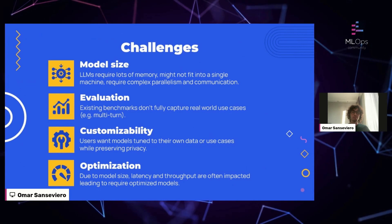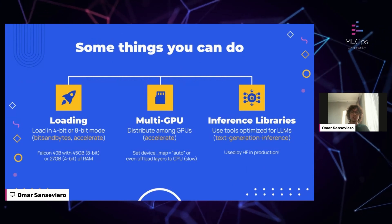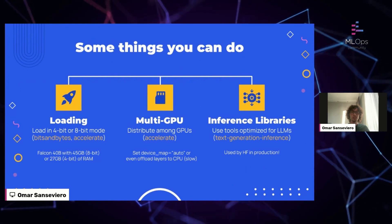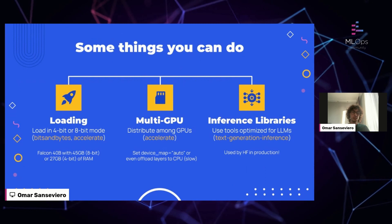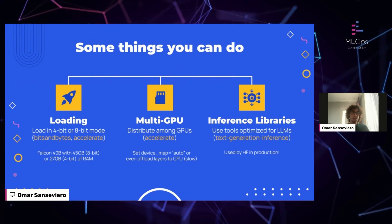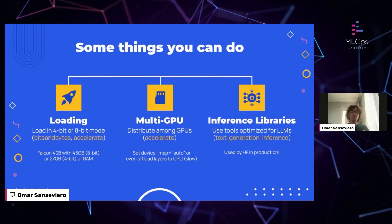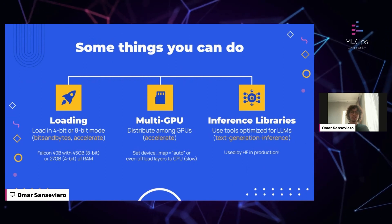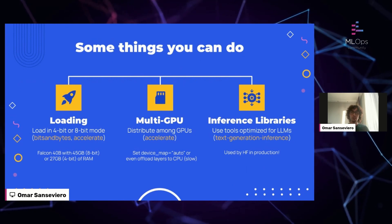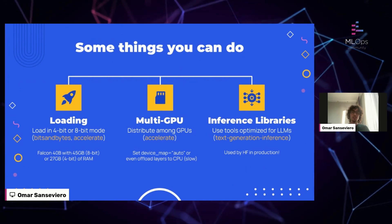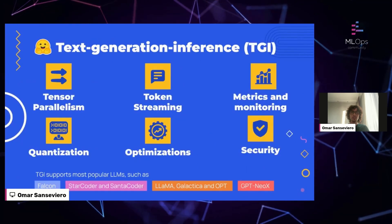Many things have been appearing in the ecosystem in the last few months. For example, there are techniques for loading models in 8-bit or 4-bit mode, which allows you to use less memory. There are open-source libraries such as bits and bytes and accelerate. In 4-bit mode, you can load the larger Falcon model with just 27 gigabytes of RAM — still a lot, but much less than the 90 gigabytes. You can even offload part of the computation to CPU, which is slower but allows you to run very large models.